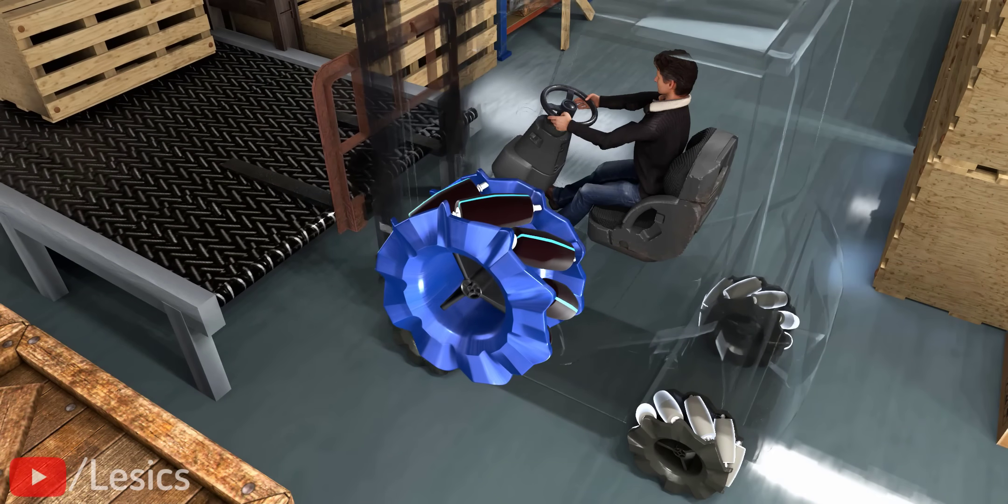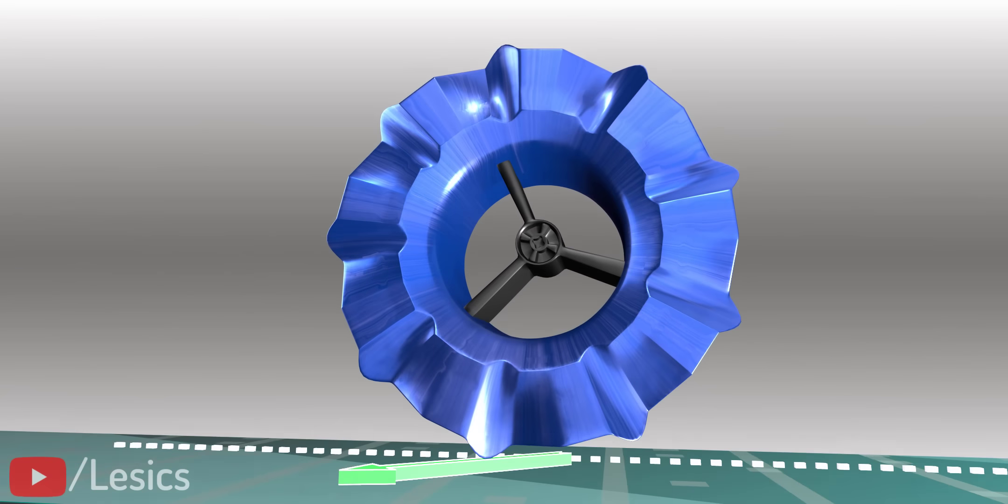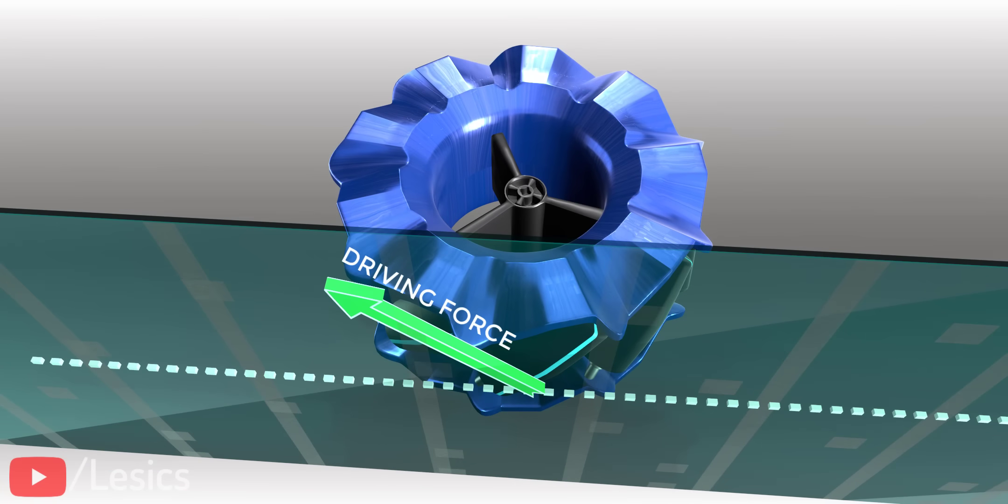The brilliance of the mechanum wheel is that it can produce a driving force at an angle of 45 degrees, even though it rolls like a normal wheel.